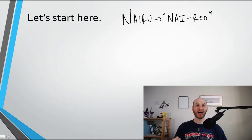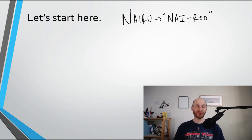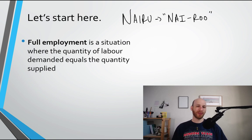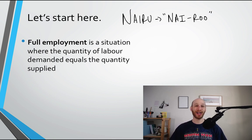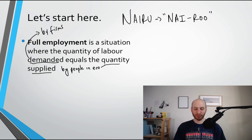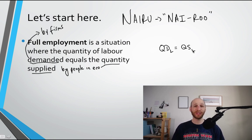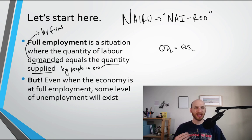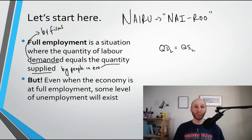We're talking about the NAIRU, and what we're going to do is start from a couple of other concepts and then come to the NAIRU. We're going to start with this idea of full employment. Full employment is the situation where the quantity of labor demanded equals the quantity supplied by people in the economy. Our idea about full employment is the same as labor market equilibrium. But what I want you to think about is that even when an economy is at full employment, some level of unemployment will exist.